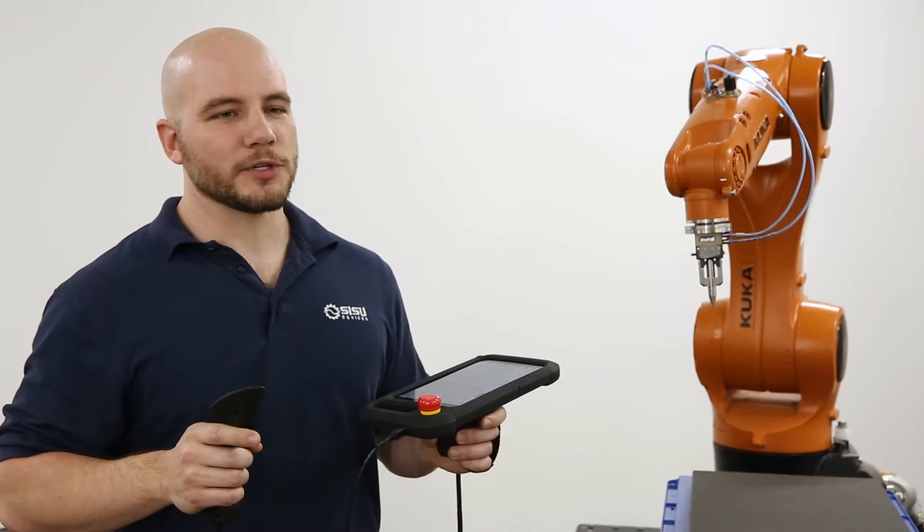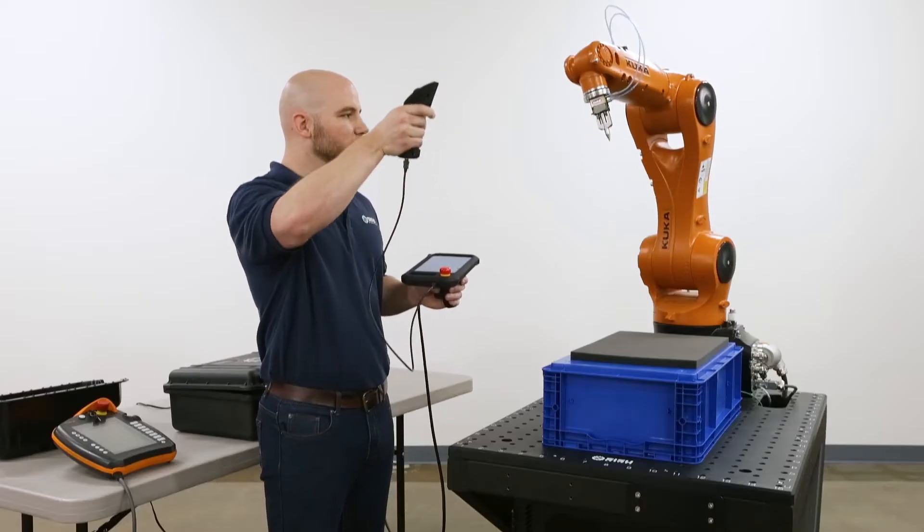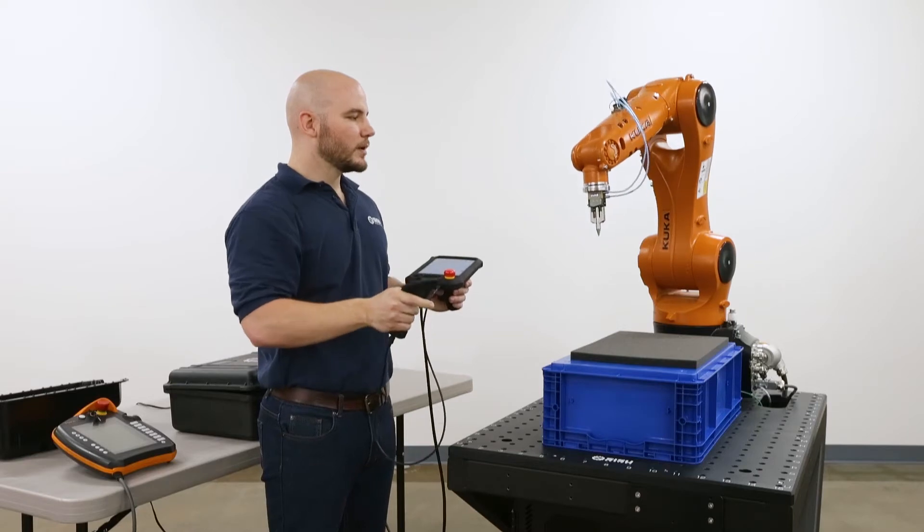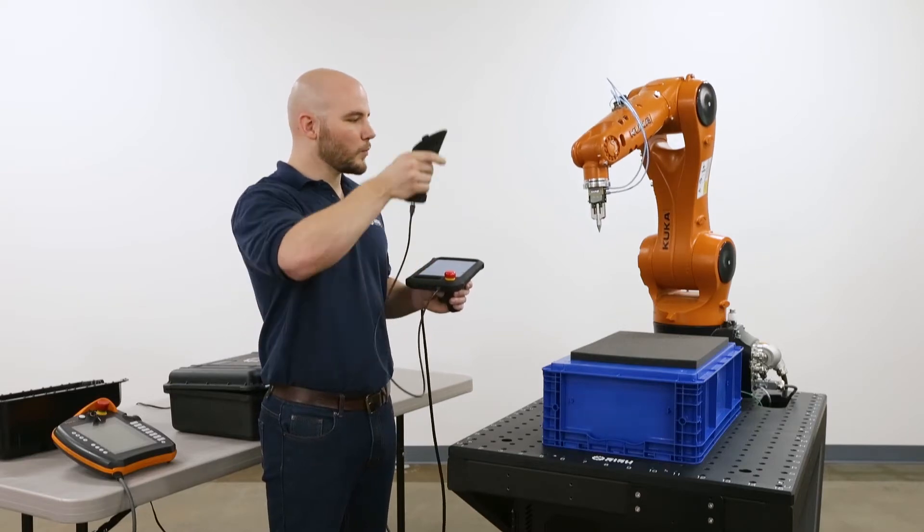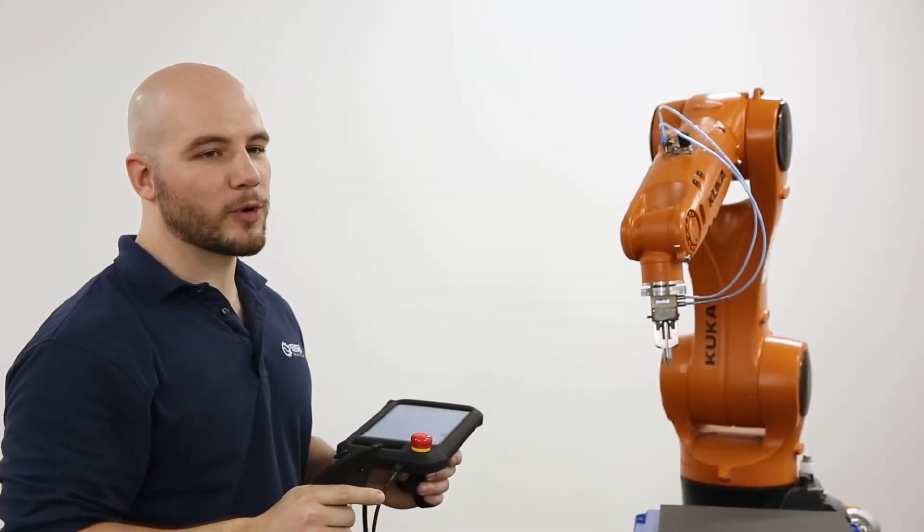The trigger is also proportional, so if I push the trigger all the way down, I get a one-to-one adjustment. If I push it down just a small amount, I get finer movements for more precise control.